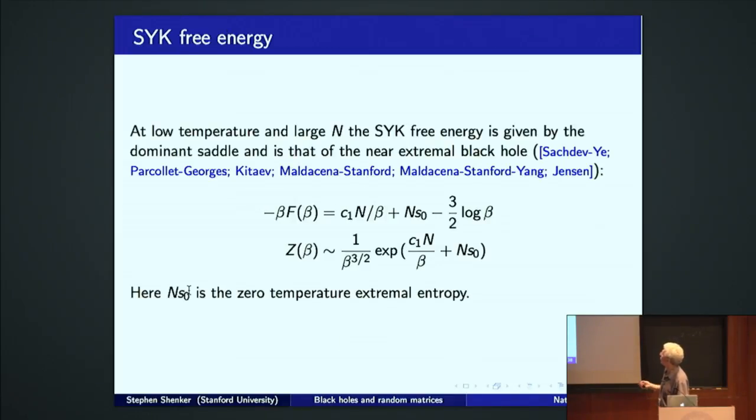Well, at low temperature and large N, the SYK free energy, or its partition function, is given by the dominant large N saddle. It's that of the near extremal black hole. Juan described a little bit about that today. The free energy is given by this. This is the entropy above extremality. There's the zero temperature entropy, and this is the one loop correction. This looks like a partition function that looks like that. A power law prefactor in beta. One over beta that's a linear near extremal entropy, and this is zero temperature entropy.